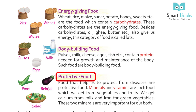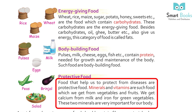Protective food: foods that help us protect from diseases are called protective foods. Minerals and vitamins are such foods, which we get from vegetables and fruits. We get calcium from milk and iron from green vegetables.